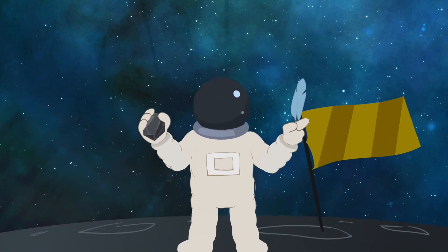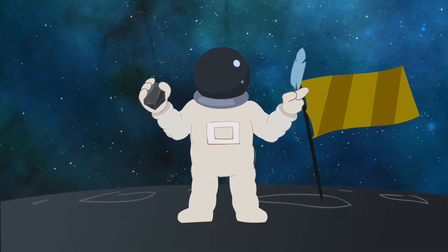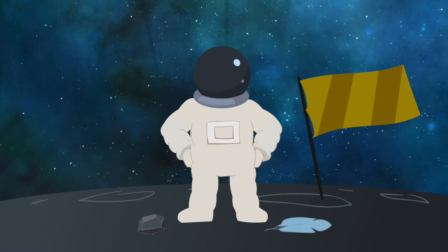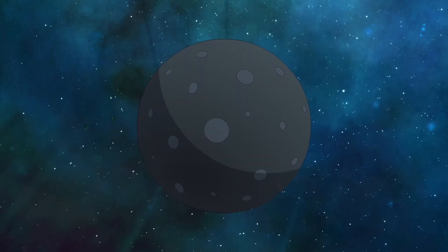Gravity always attracts things, and always in the same way. A feather and a stone fall in the same way, at least on the moon, where there is no air to blow the feather away, so say the astronauts.